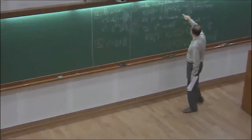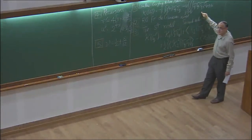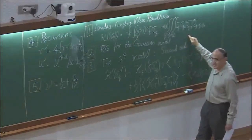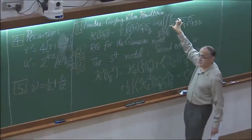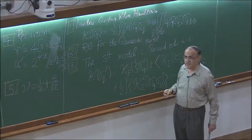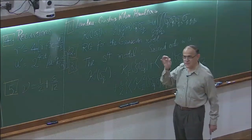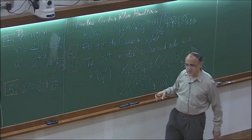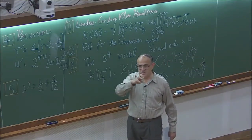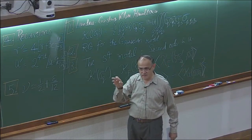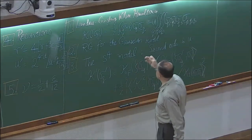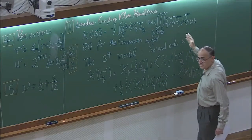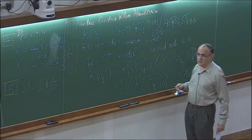Second, we will take a specially simple case by dropping the fourth-order term and keeping the rest — that is known as the Gaussian model. We will solve it using renormalization. Then we will come to the full Hamiltonian, which we can't solve exactly, so we will treat it in perturbation theory, as we did yesterday, to second order.